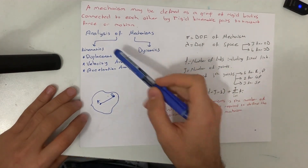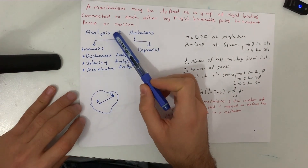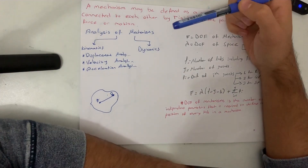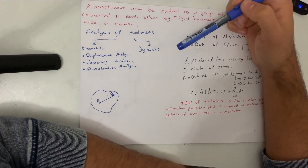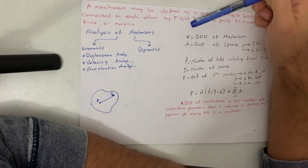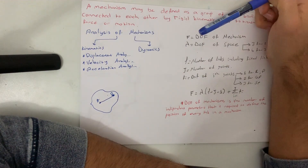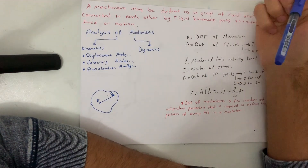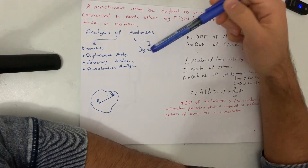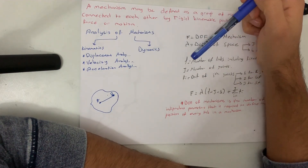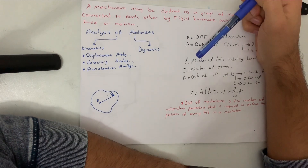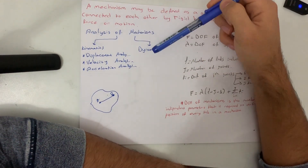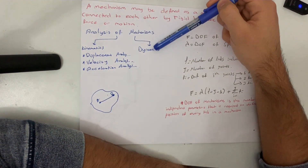Let's investigate the analysis of mechanisms. We should analyze it in two parts: one is kinematics and the other is dynamics. What is the difference between kinematics and dynamics?